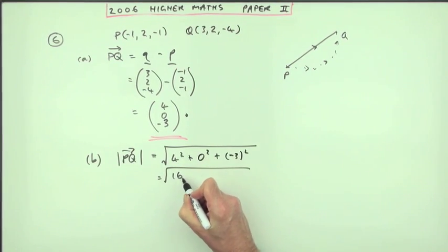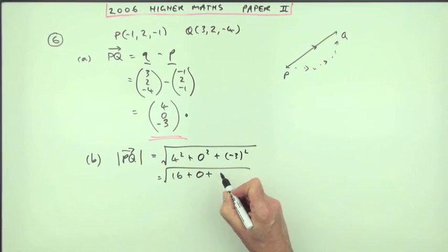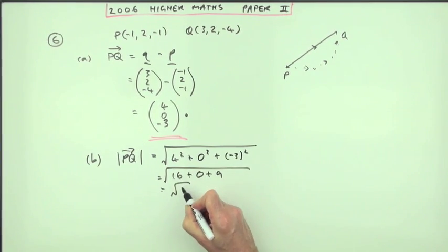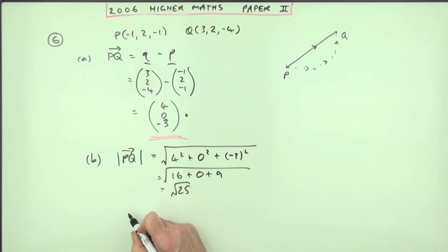So it's the square root of 25, but don't leave it like that. 16 and 0, I know I didn't write that, and 9. So it's the square root of 25. So the length of PQ is 5. Here's the mark.